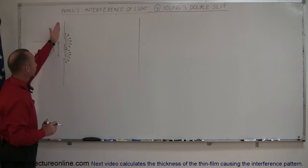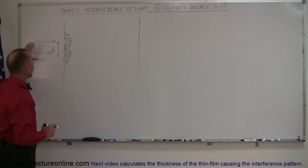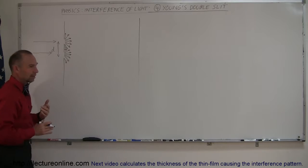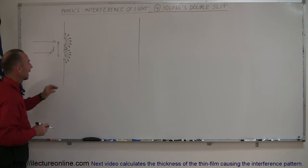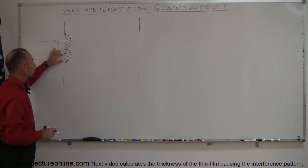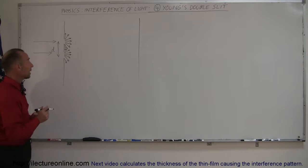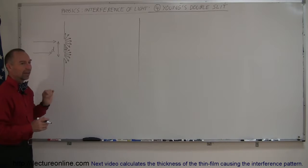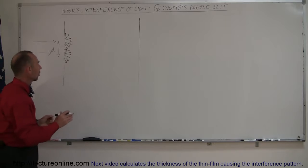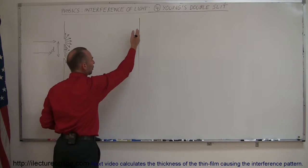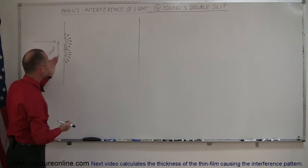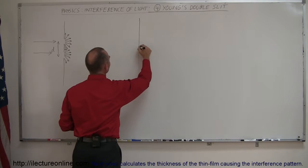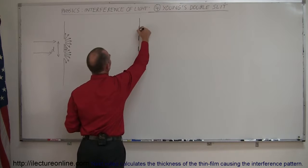We have a screen with two small slits a distance d apart, and we shine light on those two slits. The slits are really, really close together — typically within a fraction of a millimeter or a few millimeters apart. When light goes through these very small openings, it will diffract on the other side, because the wavelength of the light is somewhat proportional to the size of these slits. Light will pass through the slits and go in all different directions.